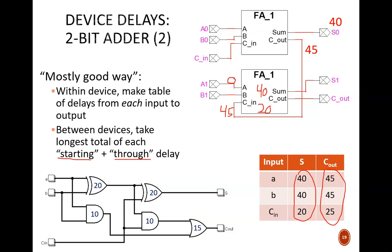This value is larger than the A1 or B1 totals. Therefore, the delay here is 65 nanoseconds. Similarly, the largest total delay for the C out is 70 nanoseconds, computed from CN's starting delay of 45 plus its through delay of 25.